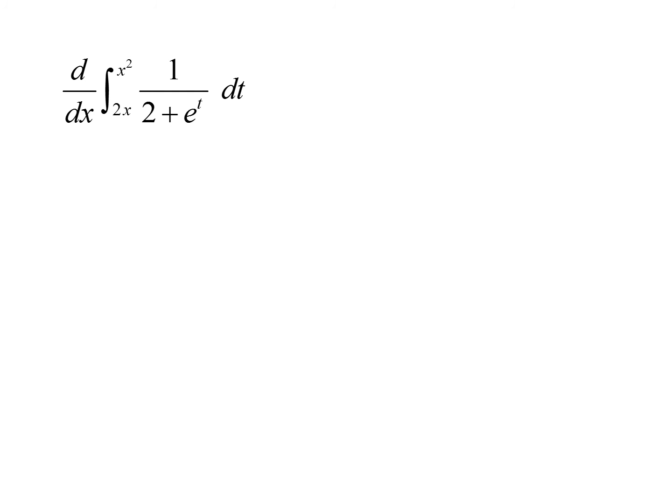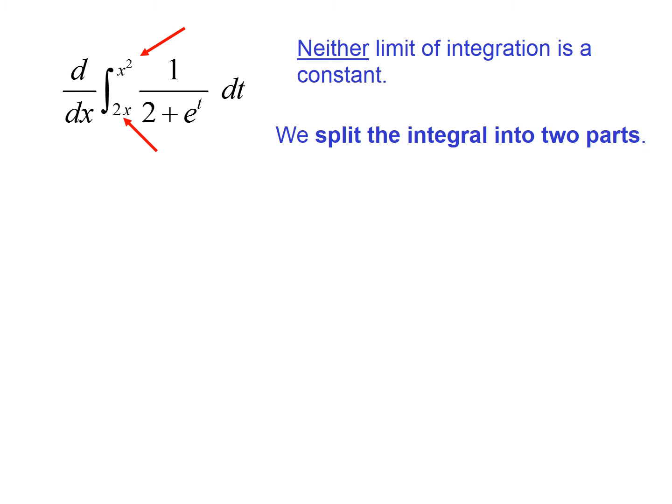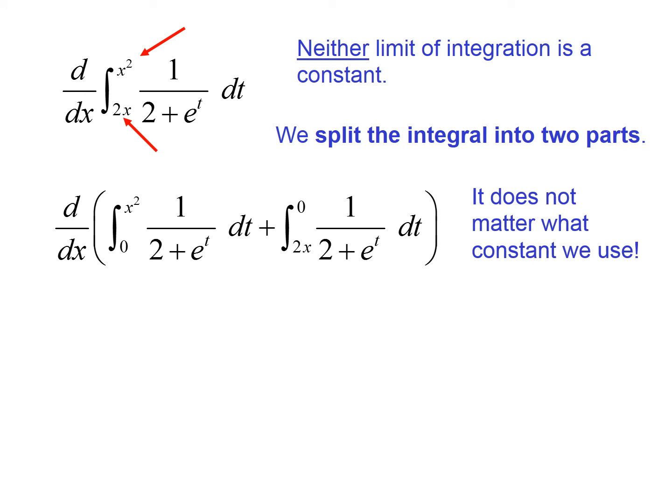So this problem is slightly different. If you notice that there are variables at the lower limits and the upper limits. So what we're going to have to do with this is use a property. And this property is going to allow us to break this up into two integrals. It doesn't matter what constant we use. I chose zero. We could have used 27.3 if we like. But we just have to break this up. And we know that between 2x and x squared, there has to be a zero somewhere in between there, or some constant. So we've broken this up and now we're going to be able to use the fundamental theorem of calculus on each part.